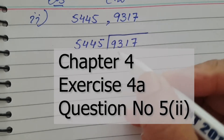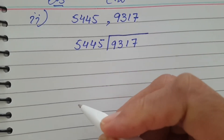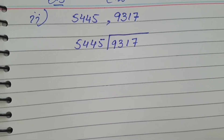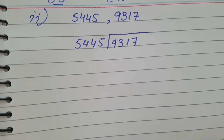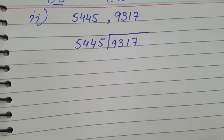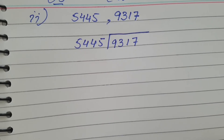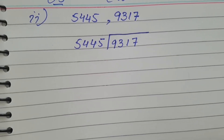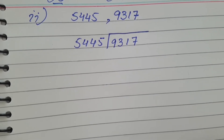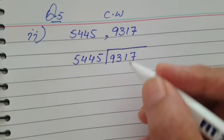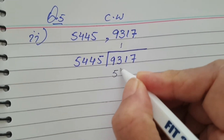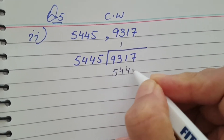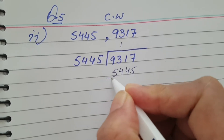Part two: find the HCF by long division. The numbers are 5445 and 9317. Put the bigger number, 9317, inside as the dividend and divide by 5445. One time gives you 5445, so do the subtraction.